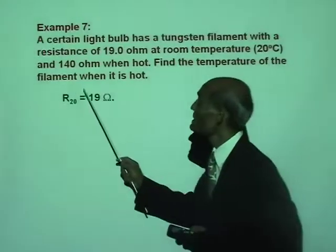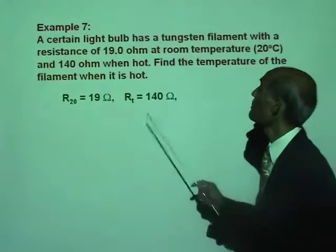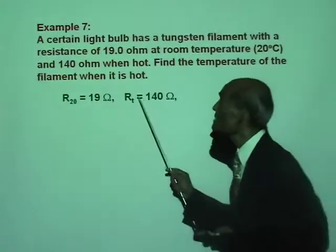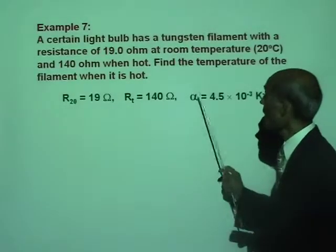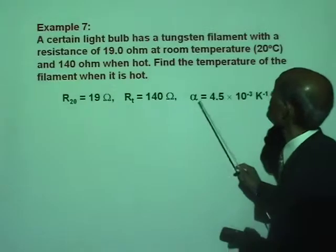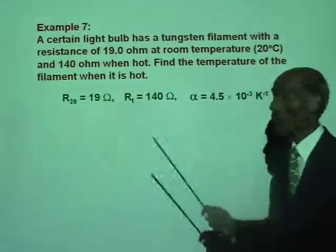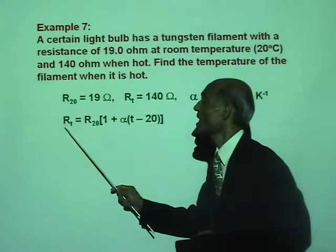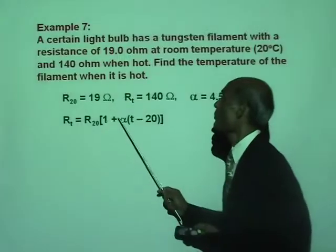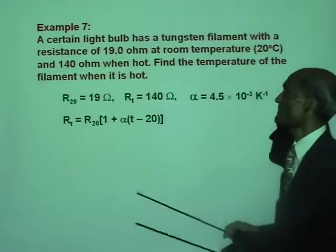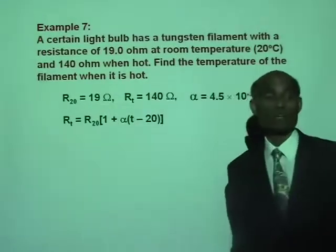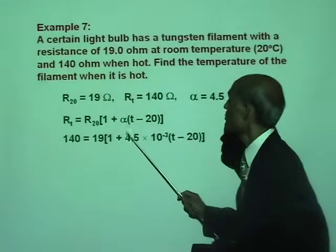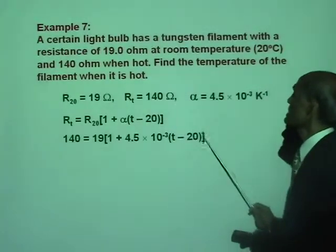Let's pick our data: resistance at 20 degrees, R₂₀, is 19 ohm; resistance at temperature T, R_T, is 140 ohm. We need to find that temperature. Alpha, the temperature coefficient of resistivity of tungsten from the tables, is 4.5 times 10 to the negative 3 per Kelvin. We'll use the equation R_T equals R₂₀ times (1 plus alpha(T minus 20)). We know all these values except T. So: 140 equals 19 times (1 plus 4.5 times 10 to the negative 3 times (T minus 20)).